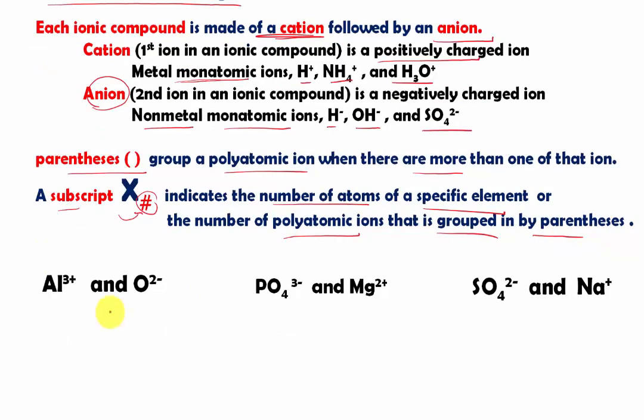Now let's look at an example. We have aluminum 3 plus and oxygen 2 minus. We know this one goes first, and this one goes second because these are negative ions. But wait a minute. What does this have to do with compounds? One last thing you have to realize is that all compounds has to have a net charge of zero, equal to zero.